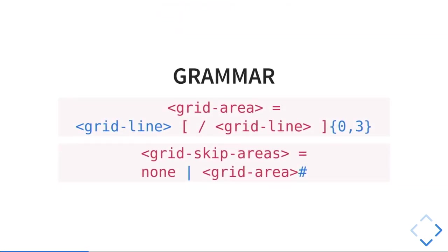Then we need to define a kind of grammar for that property. We already have a grid-area shorthand in CSS grid layout, where we put row-start slash column-start slash row-end slash column-end with a slash. So basically we could reuse that. This grammar means that grid-skip-areas can be none, or this hash symbol is like a comma-separated list of grid areas. Maybe this is not the best syntax possible, but this is the one I chose for this talk.